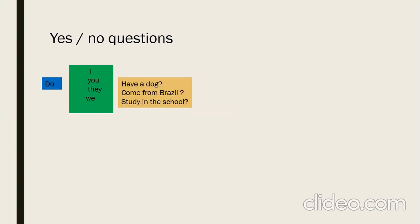Examples: Do I have a dog? Do you come from Brazil? Do they study in the school? Do we have a dog? As you can see, we place the auxiliary 'do' — shown in blue — at the beginning to form the question, followed by the subject (I, you, they, or we), and the rest remains the same. In question form, we use an interrogation mark at the end, and 'do' at the beginning to make it a question.